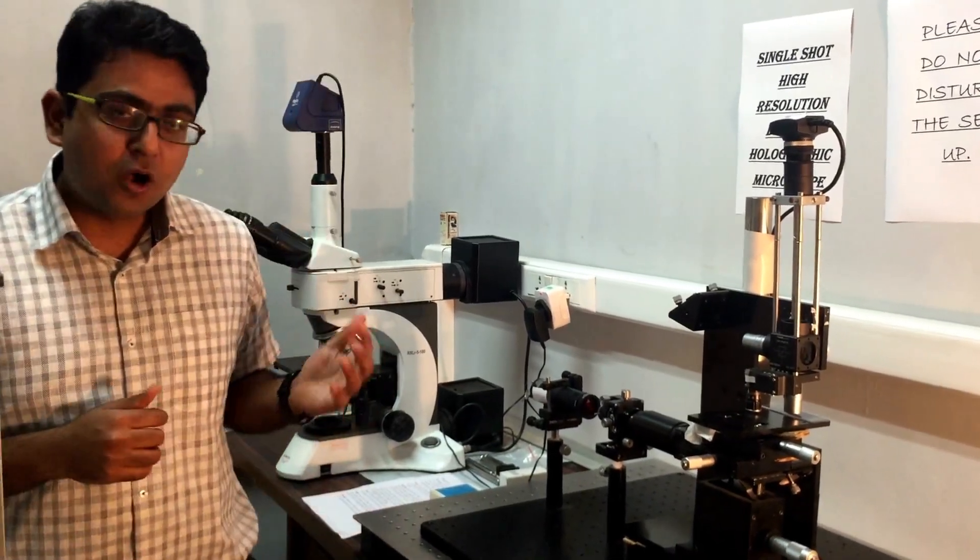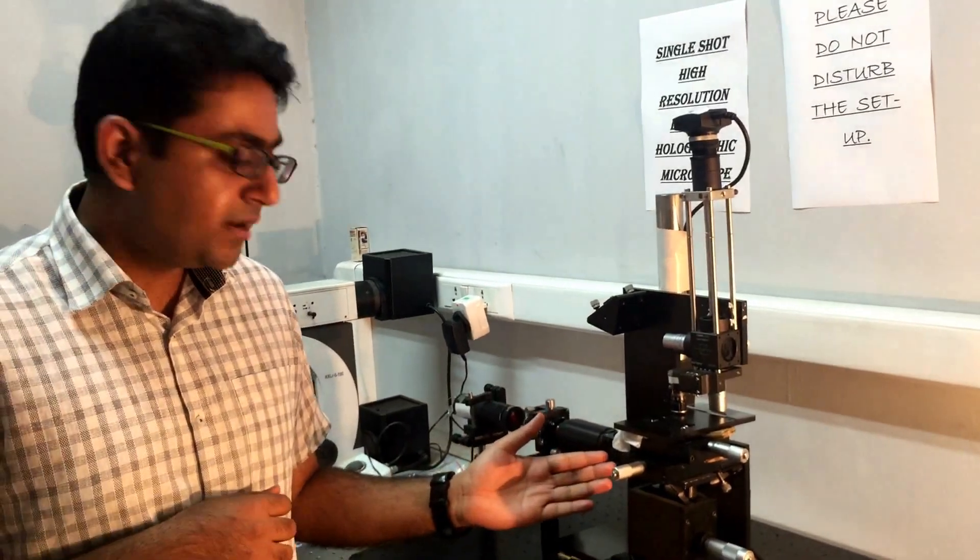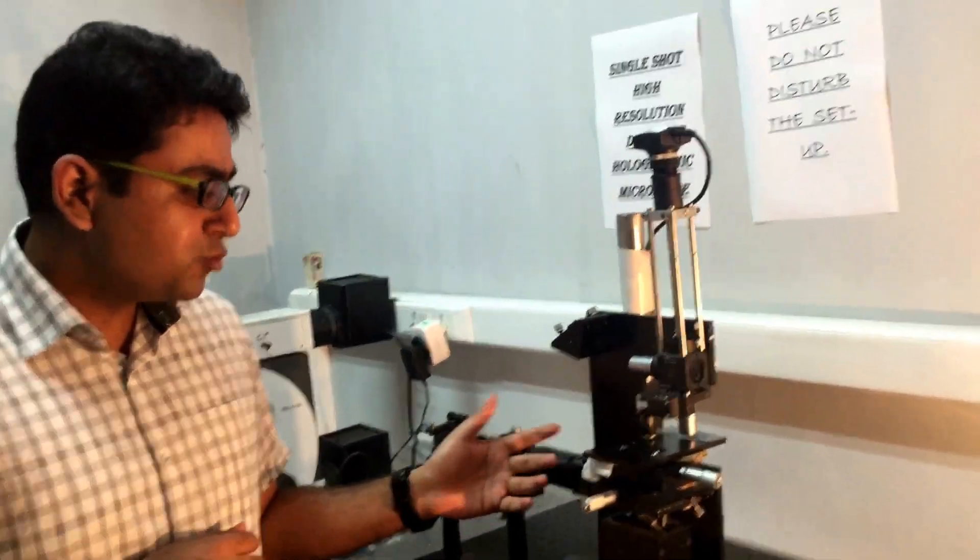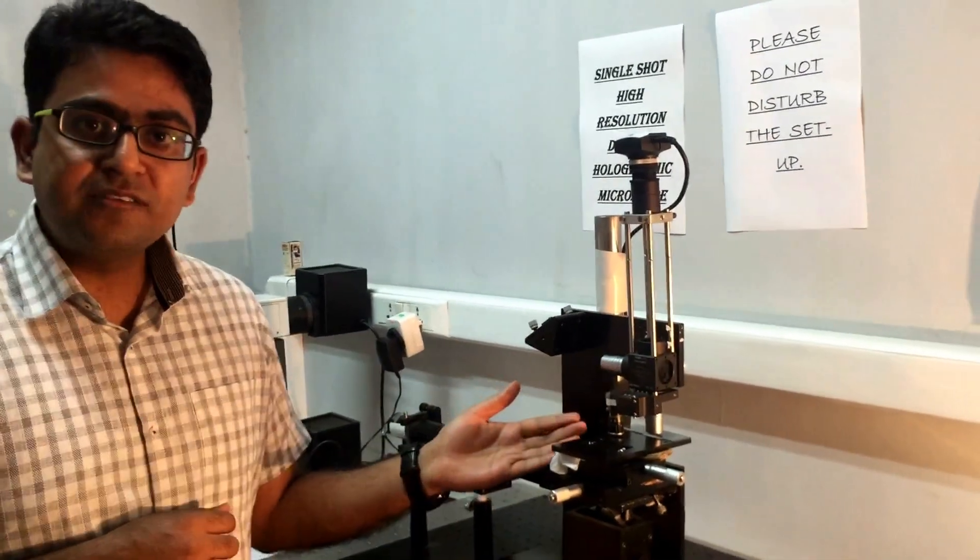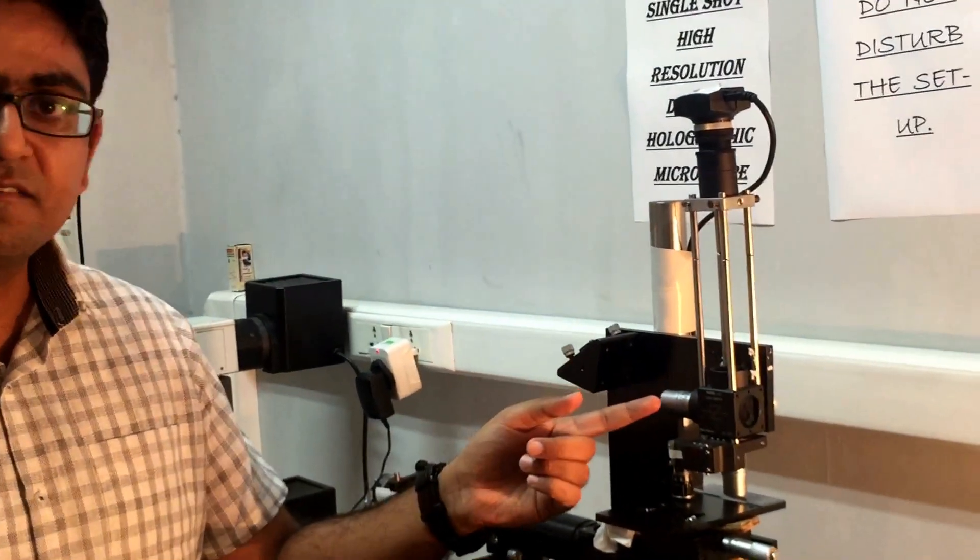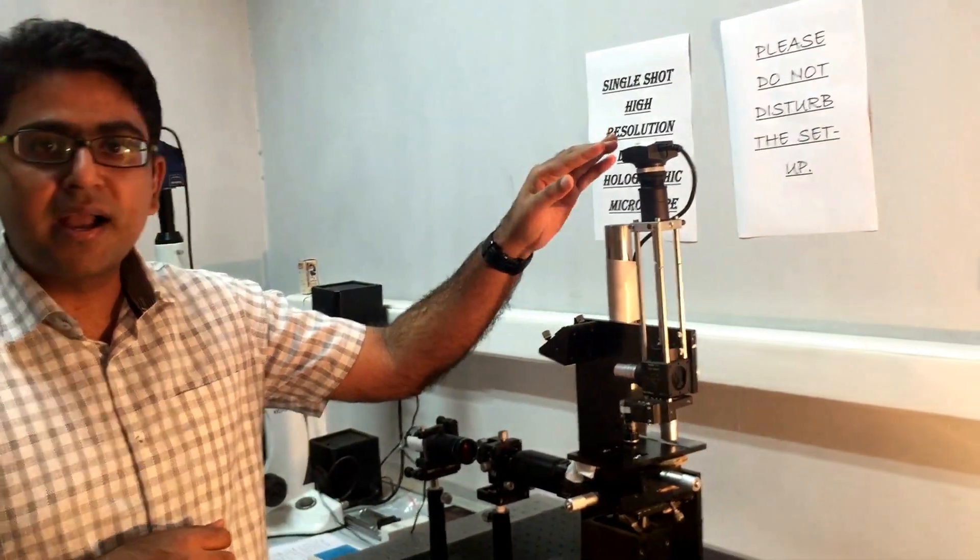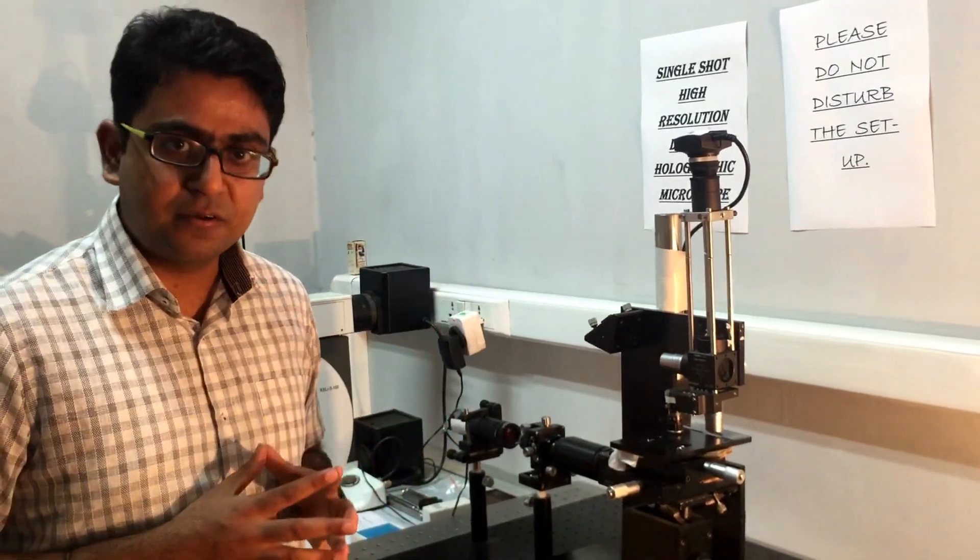Now let me show how it works. The laser beam arrives at this beam splitter and splits into two parts. One beam passes through the sample and the other is treated as the reference beam. Both beams combine at the detected camera plane and we record an interferogram.